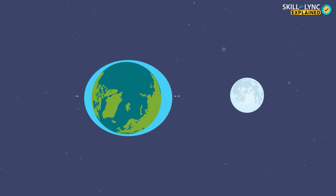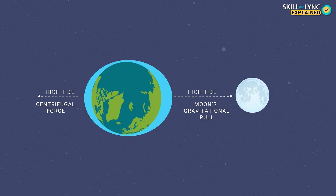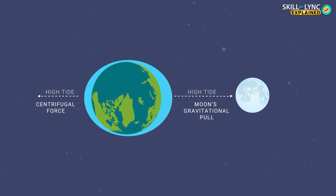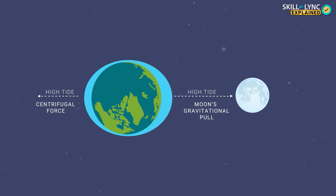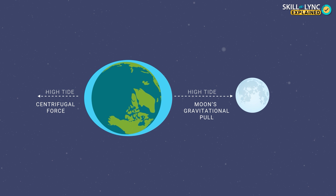Next, we have to understand that when the earth rotates, the centrifugal force — the outward force one experiences when sitting on a spinning merry-go-round — also causes the sea levels to rise. So this increase in sea level causes the second high tide.